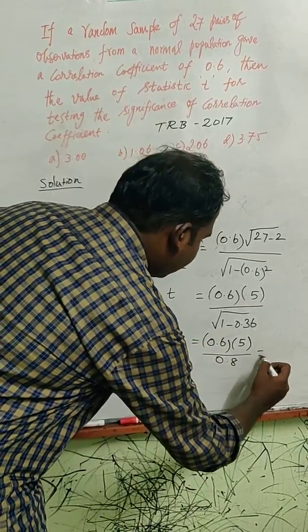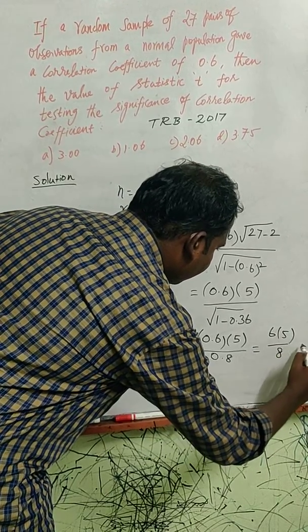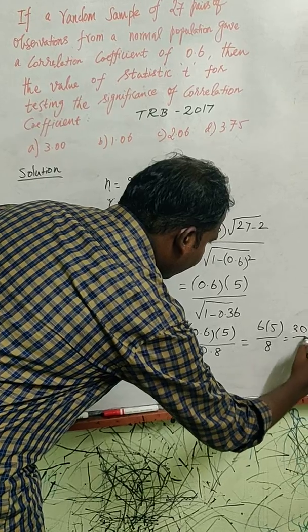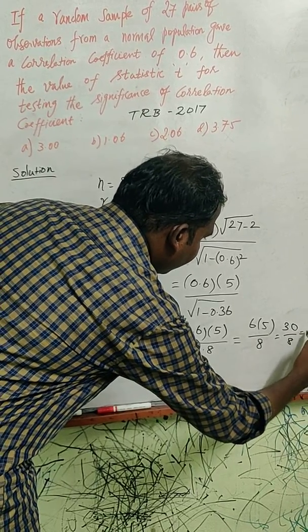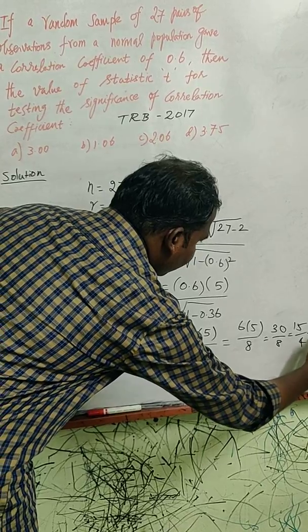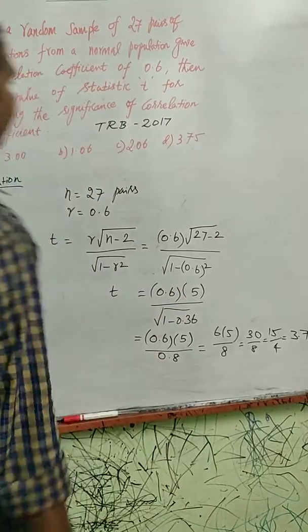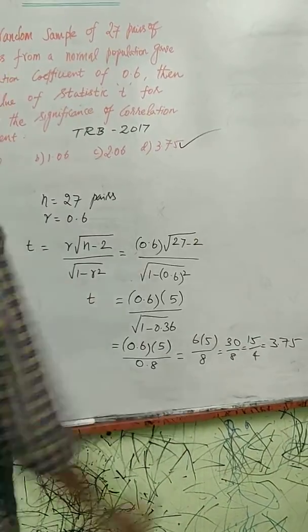0.6 and 0.8. So 30 by 8, 15 by 4, 75, so 3.75. Option D is correct.